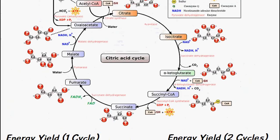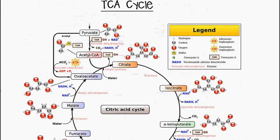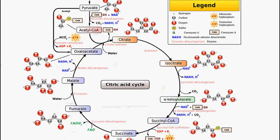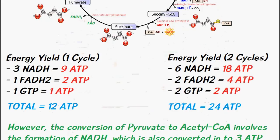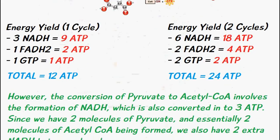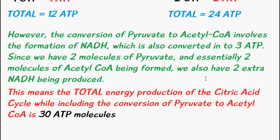However the conversion of pyruvate to acetyl-CoA also produces an NADH. So since this happens twice we get an additional two NADH's that are being produced. So I've made that note here that there's an additional two NADH's being produced.